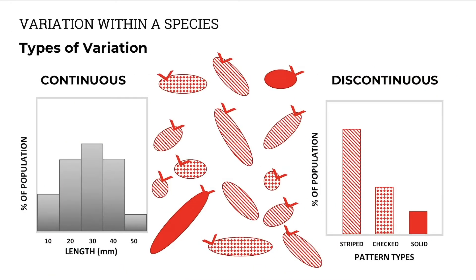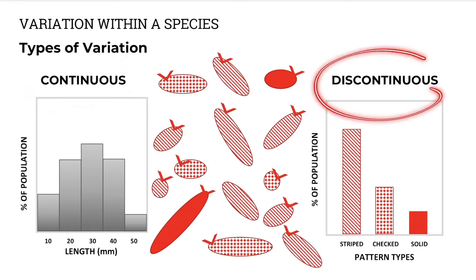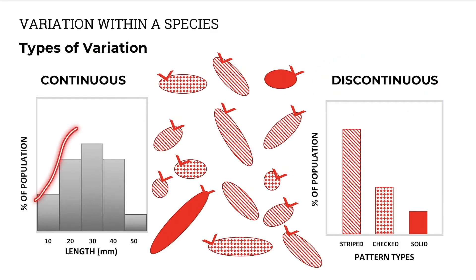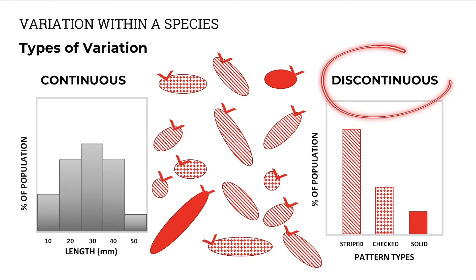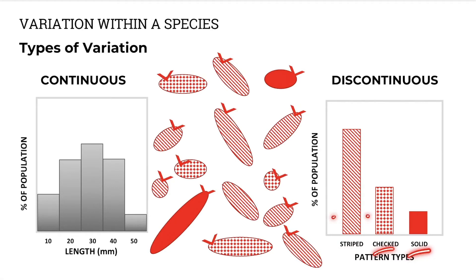Then we have types of variation: number one, continuous; number two, discontinuous. In continuous variation, we have a continuous range of values — for example, organisms can be any length, no gaps. Discontinuous variation, on the other hand, is where organisms fall into categories. They can either be striped in pattern, or checked, or solid. We indicate this with gaps between the data.